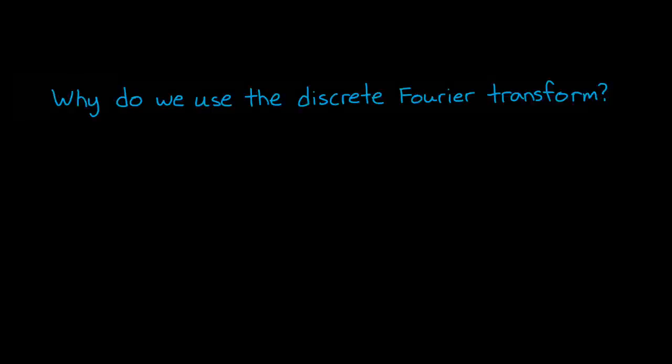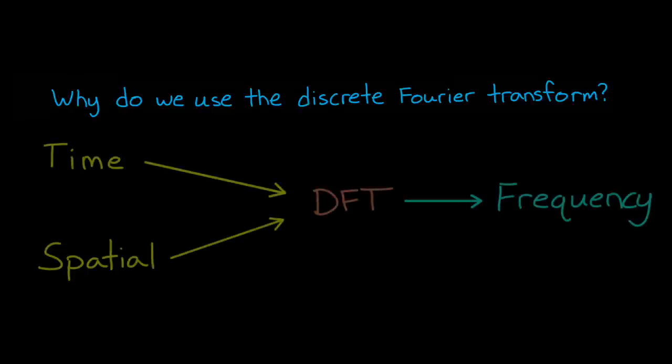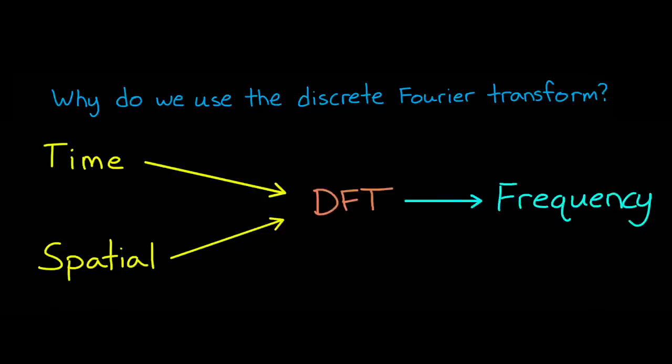Alright, so to begin, our first question we want to ask is why are we using the discrete Fourier transform? Well, the DFT transforms a signal from the time domain, or a spatial domain like distance, into the frequency domain. And one of the main reasons for making this transformation is because the features of a signal that we're interested in are not always obvious in the time or spatial domains.